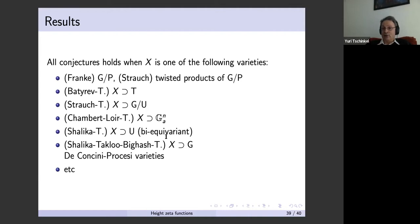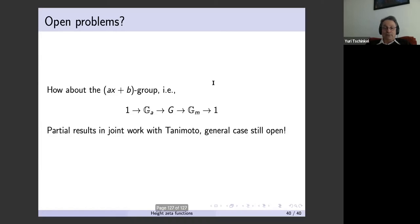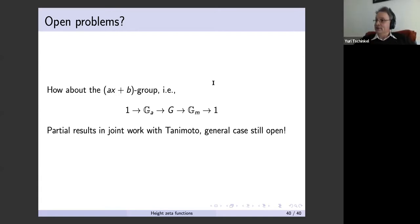The advantage over the torsor method is that once you know how to prove it, it works over all number fields and very generally. There is still an open problem: look at the Ax + B group — an extension of G_m by G_a — and we don't know the full conjecture for arbitrary compactifications of this group; it's a surface. We have some partial results with Tanimoto, but the general case is still open. Thank you.